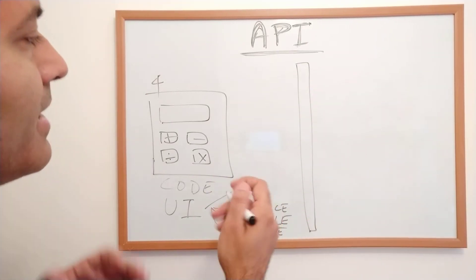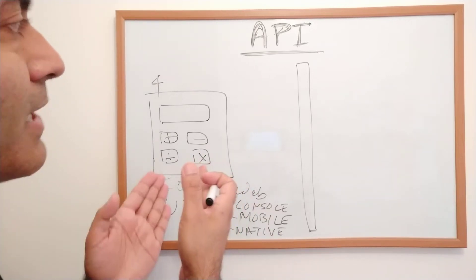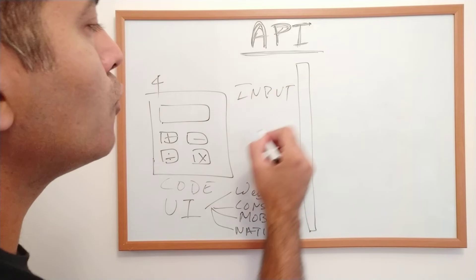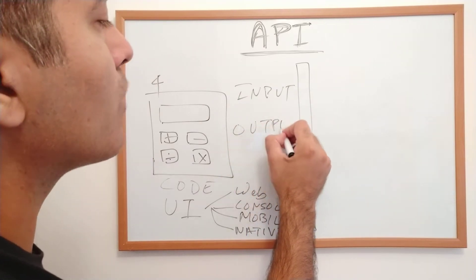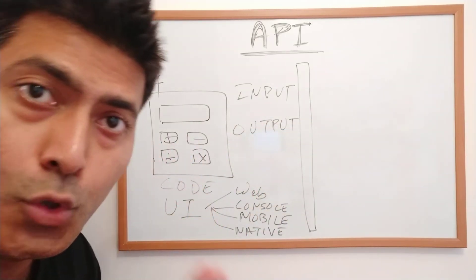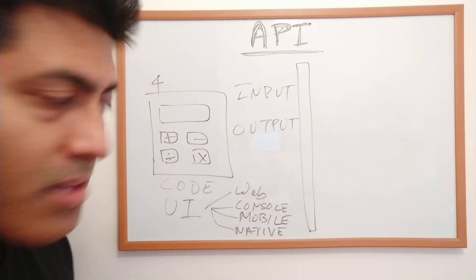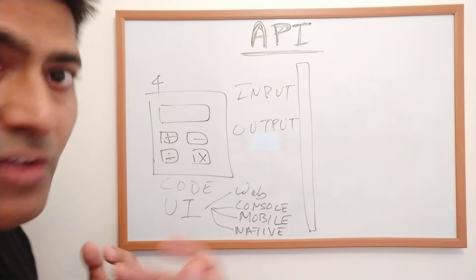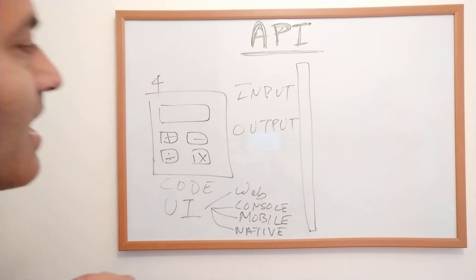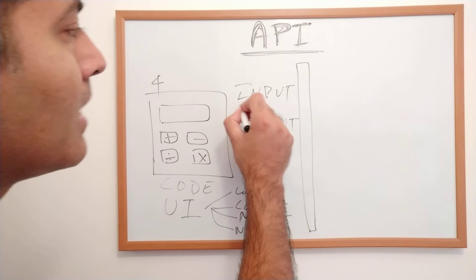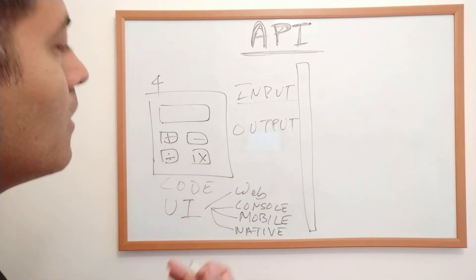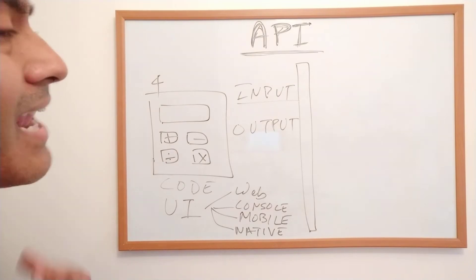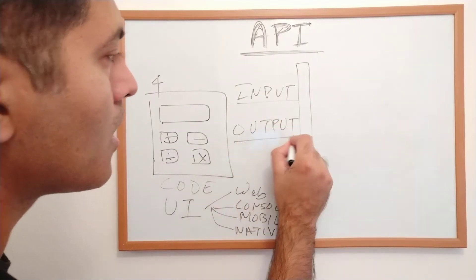For example, in this calculator, you have input and output. If I'm using the UI you created like the web interface, I'll simply open AmazingCalculatorByRavi.com and use the UI. The input is a number, and based on the calculation I want to perform, I'll get some output.